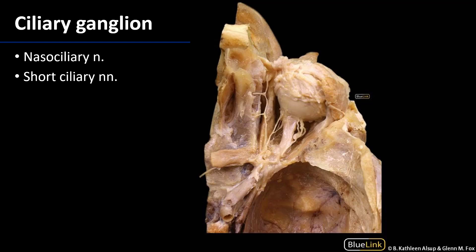Now let's look at the nasociliary, that elusive branch of V1 — we can see the trunk there. The nasociliary gives rise to the long ciliary nerves, which innervate the eye, and the ethmoidal nerves, which innervate the ethmoidal air cells and part of the nose, and it terminates as the infratrochlear nerve. The nasociliary, along with the oculomotor nerve and some sympathetic branches, connect to the ciliary ganglion, which lies just lateral to the optic nerve and communicates with the eye via the short ciliary nerves.